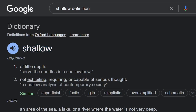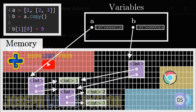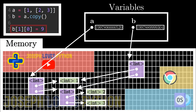So when modifying B[1][0], we are actually modifying a pointer nested within a common object that both A and B still point to. Python creates the new value 9 in memory and this pointer now points to it, so we effectively modified something shared between A and B — and that's exactly why this modification also affected A's value.